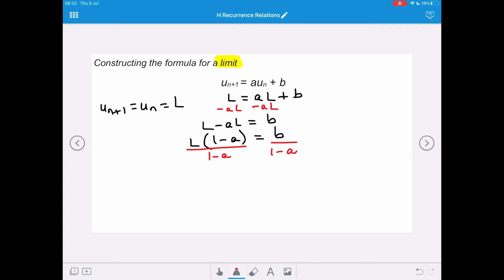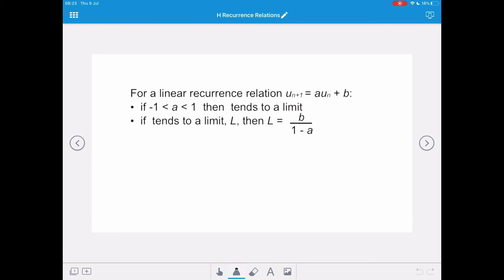And so our limit, L, is equal to b, our constant term, divided by 1 minus a, where a is our common difference. So if a lies between negative 1 and 1, or we can write it as the modulus of a is less than 1, then there is a limit.